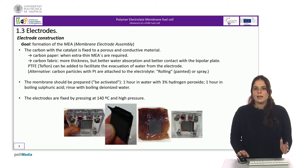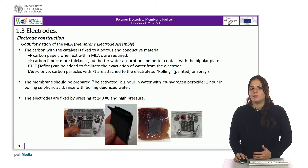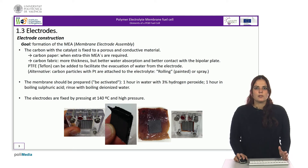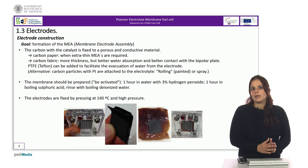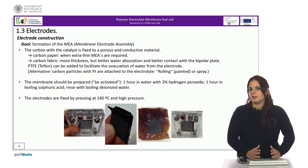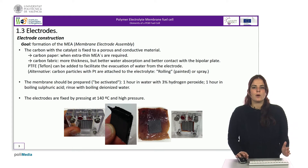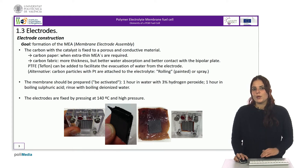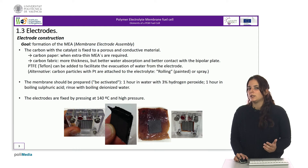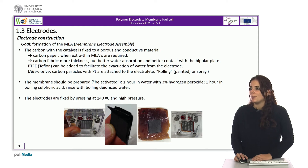The electrodes can be either carbon paper or carbon fabric. Carbon paper offers a much lower thickness of the membrane electrode assembly. However, carbon fabric allows a higher absorption of water and a better contact with the bipolar plate.